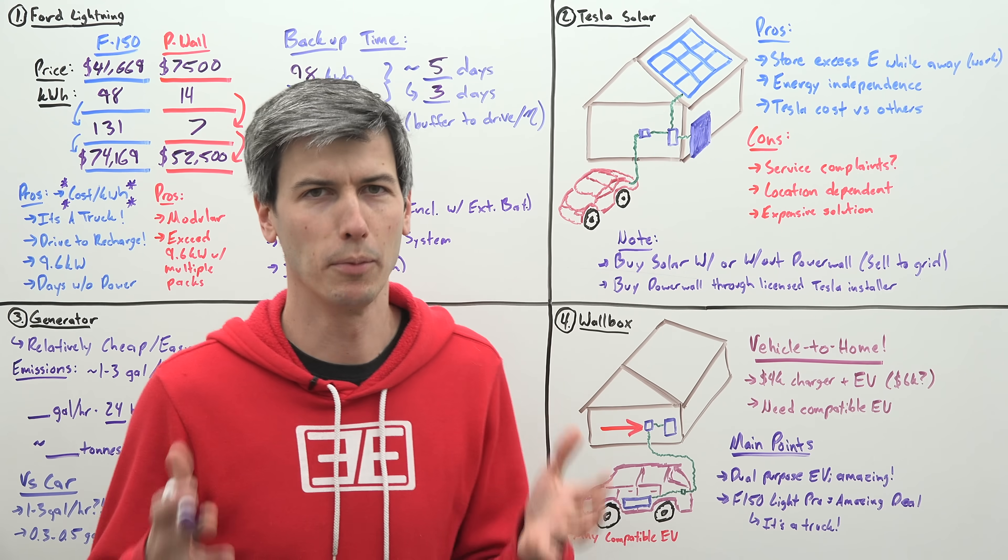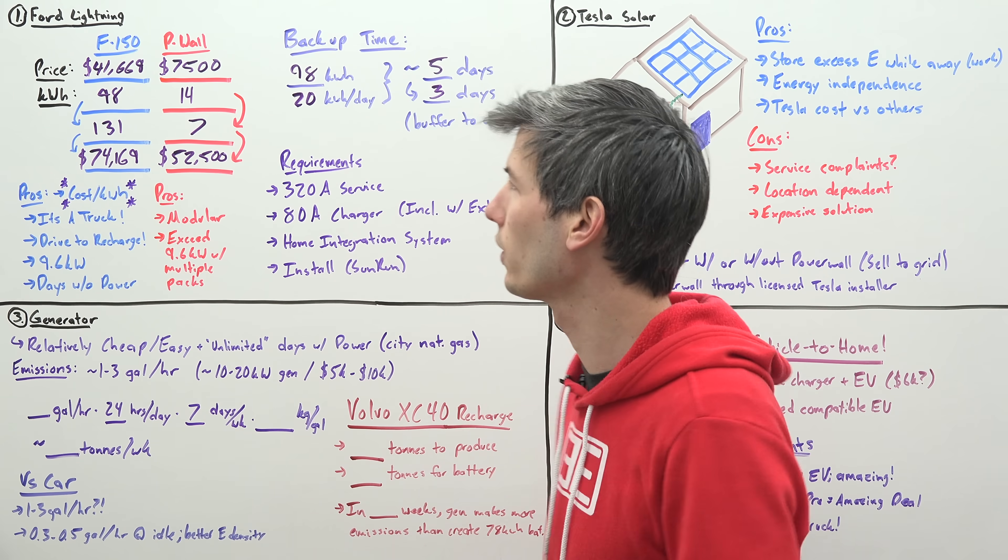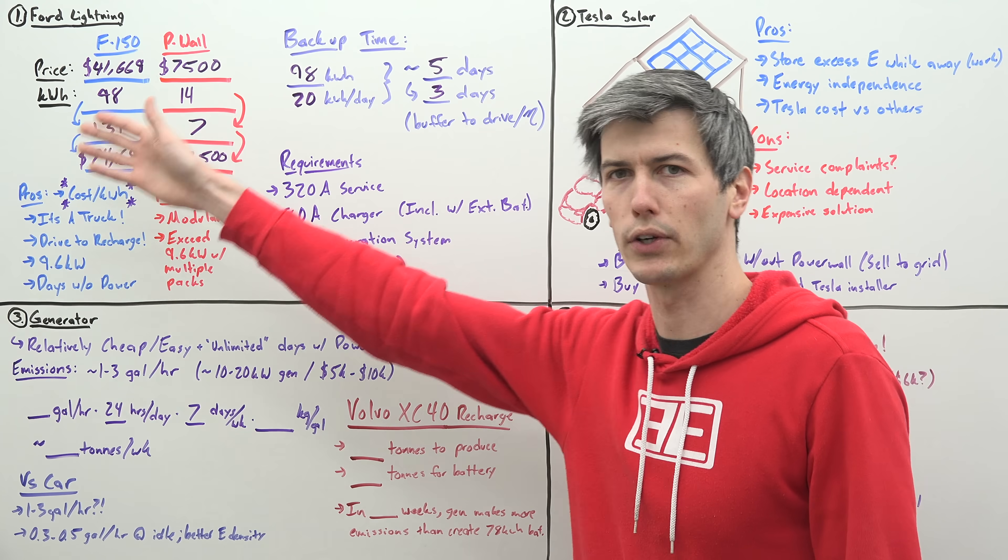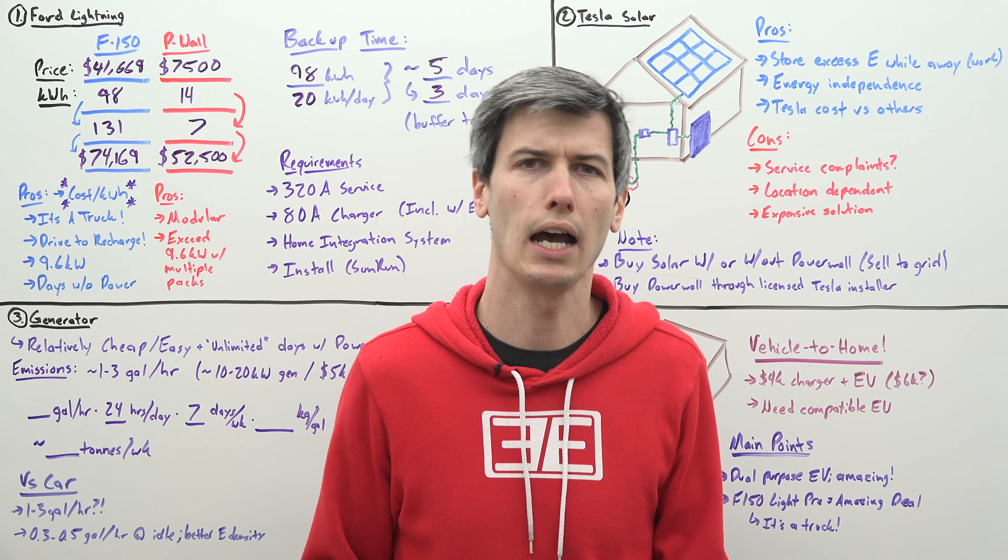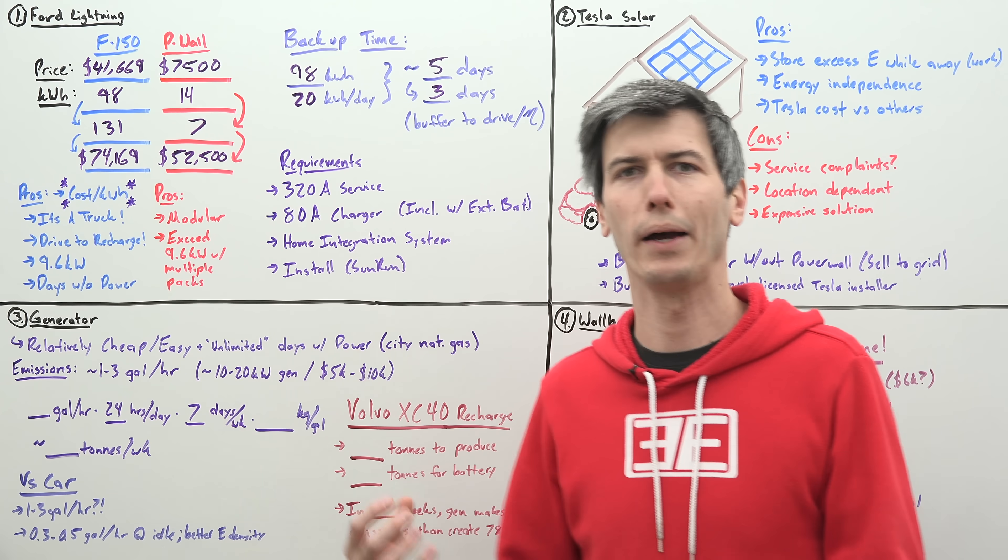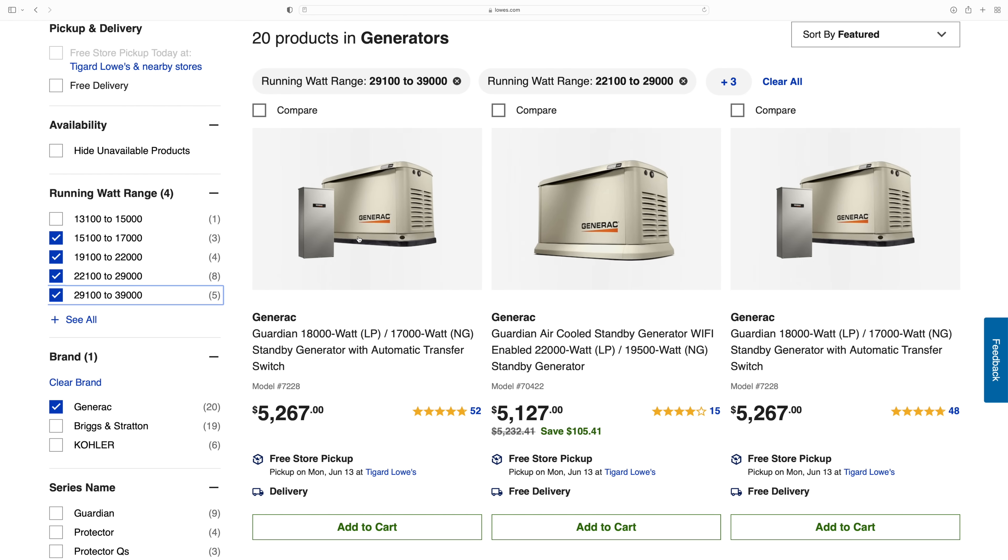All right, so let's be realistic for a moment. These are expensive solutions. $30,000 to $50,000 for a solar system. $40,000 for a truck could be $20,000-some grand to get a Powerwall set up. So realistically, I just want a cheap solution for my home that gives me backup power. What should I do? Well, then I looked at generators.